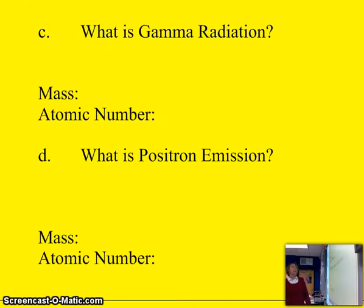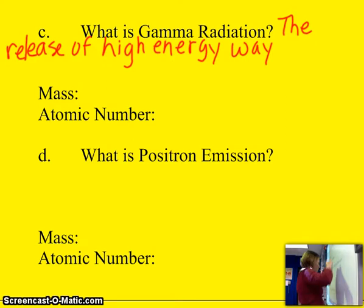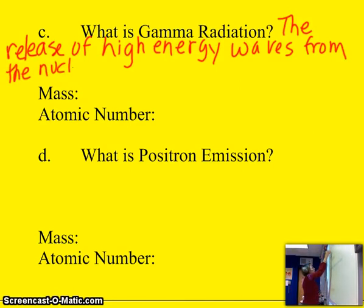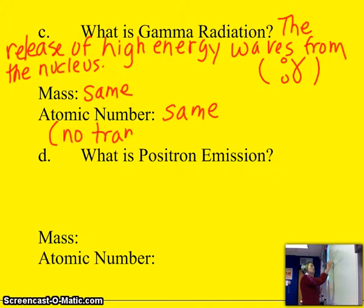Gamma radiation is the release of high-energy waves from the nucleus, damaging high-energy waves. And many things undergo gamma radiation, but if you think of what you're releasing, you're releasing a substance that has no mass and has no charge. So the mass remains the same, and the atomic number remains the same. This is the one form of radiation where there is no transmutation.